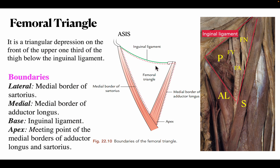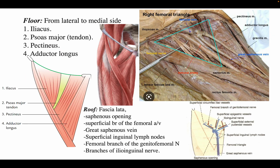The boundaries of the femoral triangle: laterally it is bounded by the medial border of sartorius, medially it is bounded by the medial border of adductor longus, the base is formed by the inguinal ligament, and the apex is formed by the meeting point of the medial border of adductor longus and sartorius muscle. In the diagram, AL indicates adductor longus, S indicates sartorius, and the red line indicates the inguinal ligament — the bounded area is the femoral triangle.